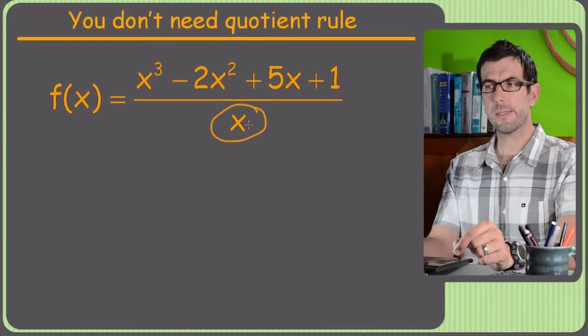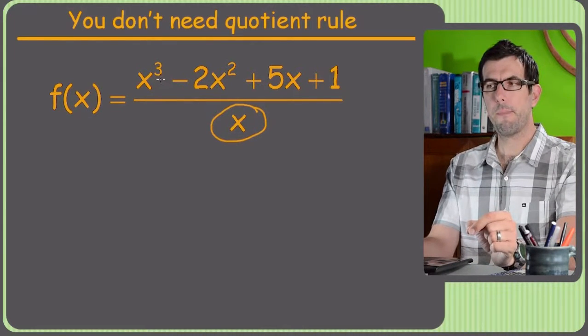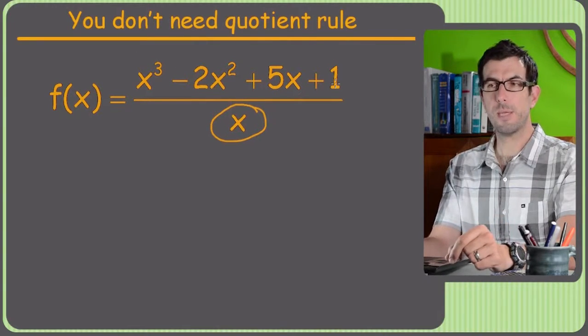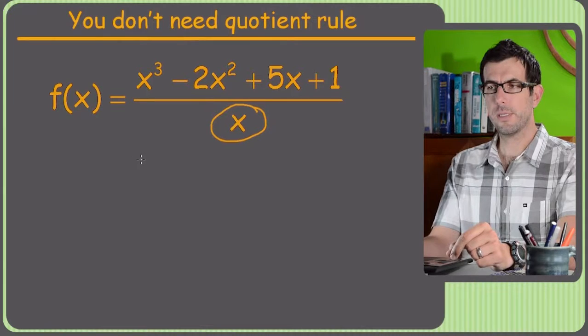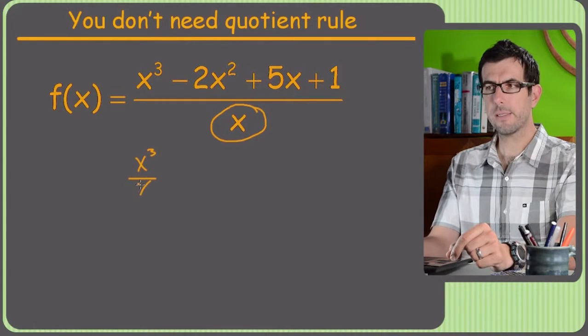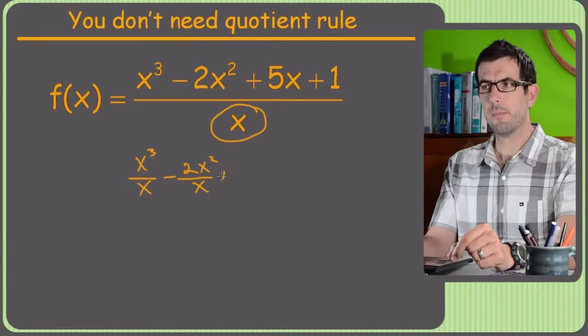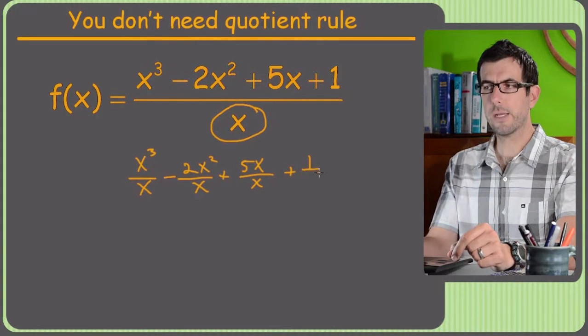Because it's just an x, I can basically split up this mass into four separate fractions. So what I'm going to do is turn this into an x cubed over x minus 2x squared over x plus 5x over x plus 1 over x.